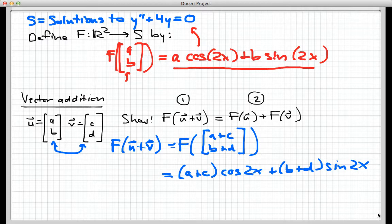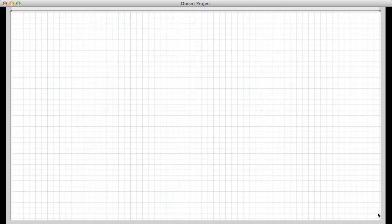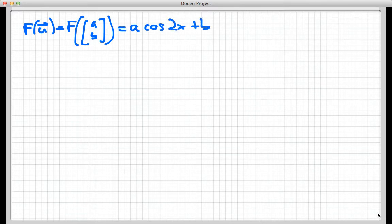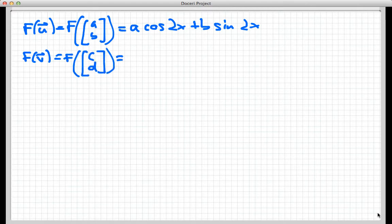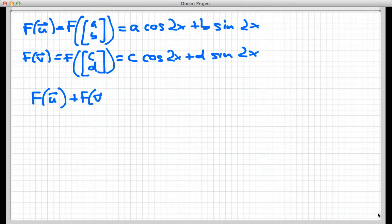Now let's go to part two and put U and V into F first, then add them later. F(U), that is F of the vector [a,b], equals a·cos(2x) + b·sin(2x). And F(V) is similar - F of the vector [c,d] equals c·cos(2x) + d·sin(2x). Now we're going to add those two things together. That's F(U) + F(V), not F(U+V) which we already did.